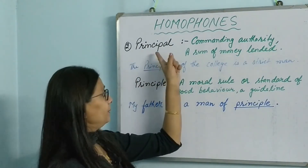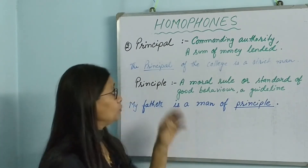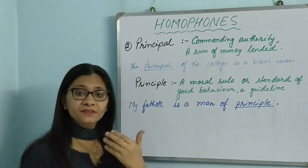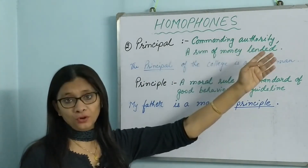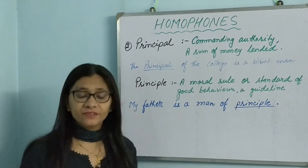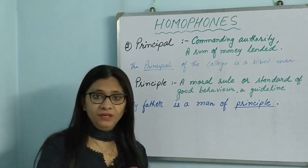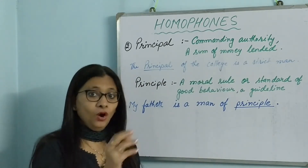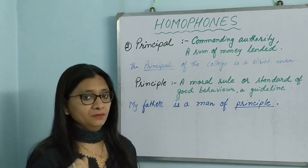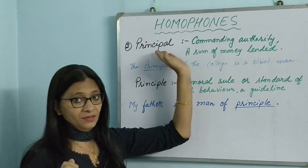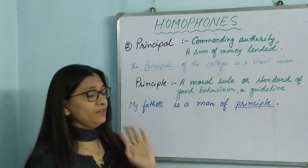The next set: 'principal' with an A — P-R-I-N-C-I-P-A-L. This principal is a commanding authority — the head of an institute — or it refers to a sum of money lent on which we earn interest. The amount we lend is the principal. For example: 'The principal of the college is a strict man.'